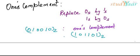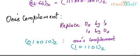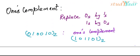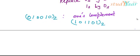0 is replaced by 1, 1 is replaced by 0, 0 is replaced by 1, again 0 is replaced by 1, 1 is replaced by 0, and the final 0 is replaced by 1. This is the one's complement of a number. So what is the two's complement of a number?